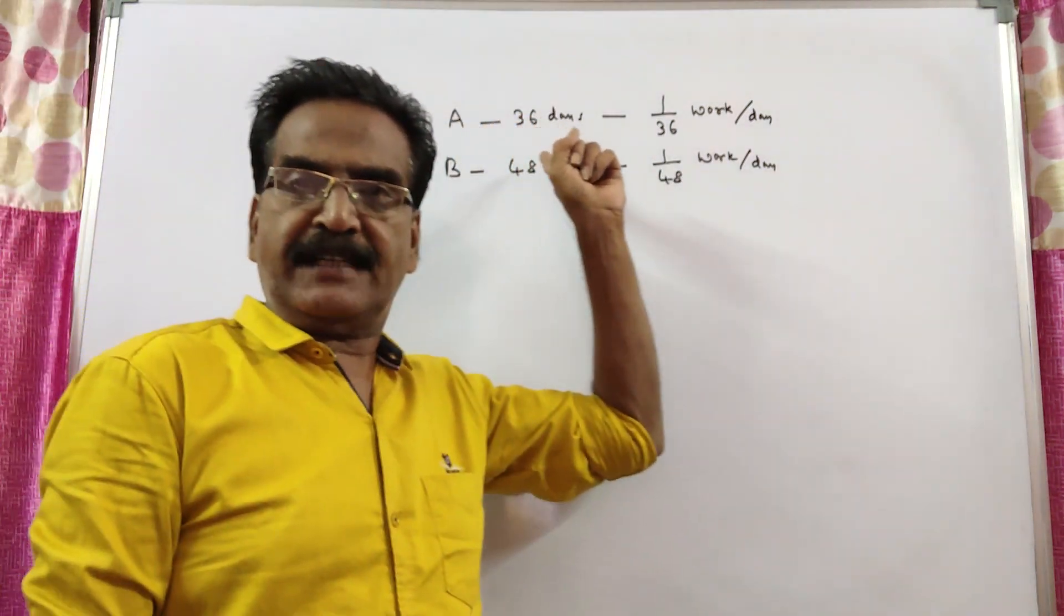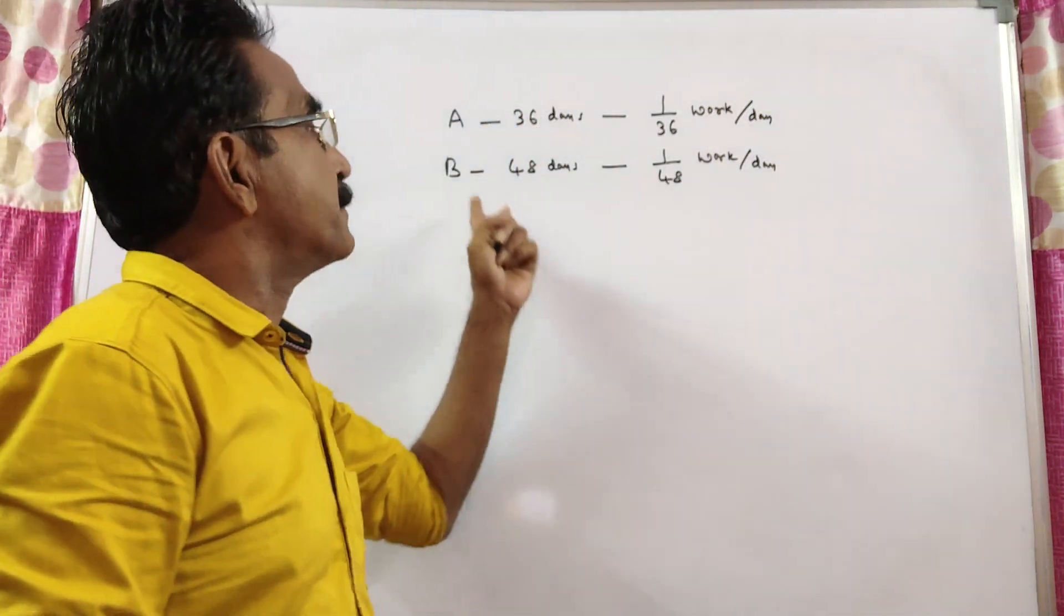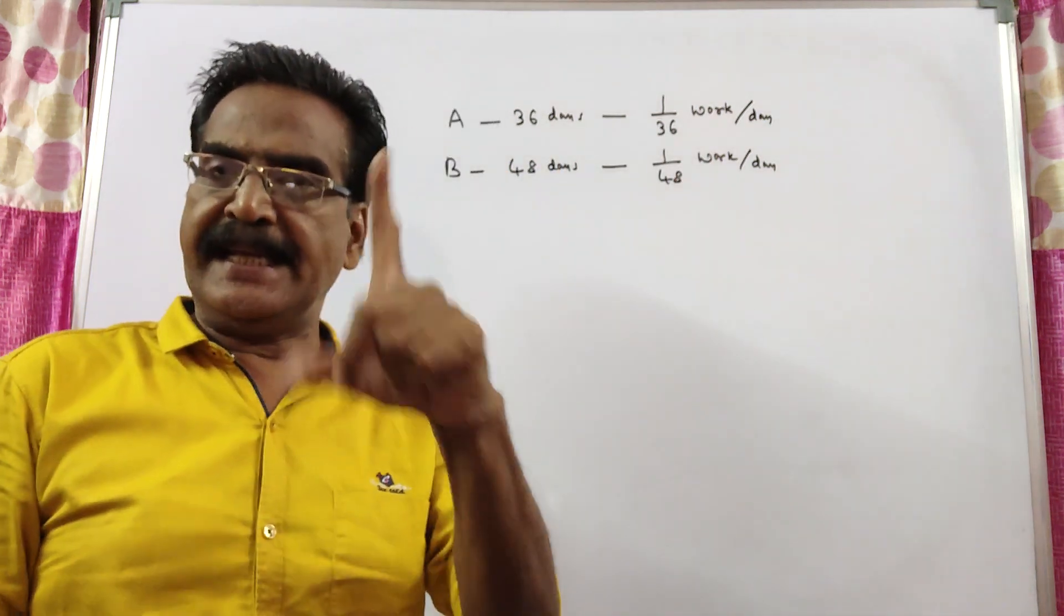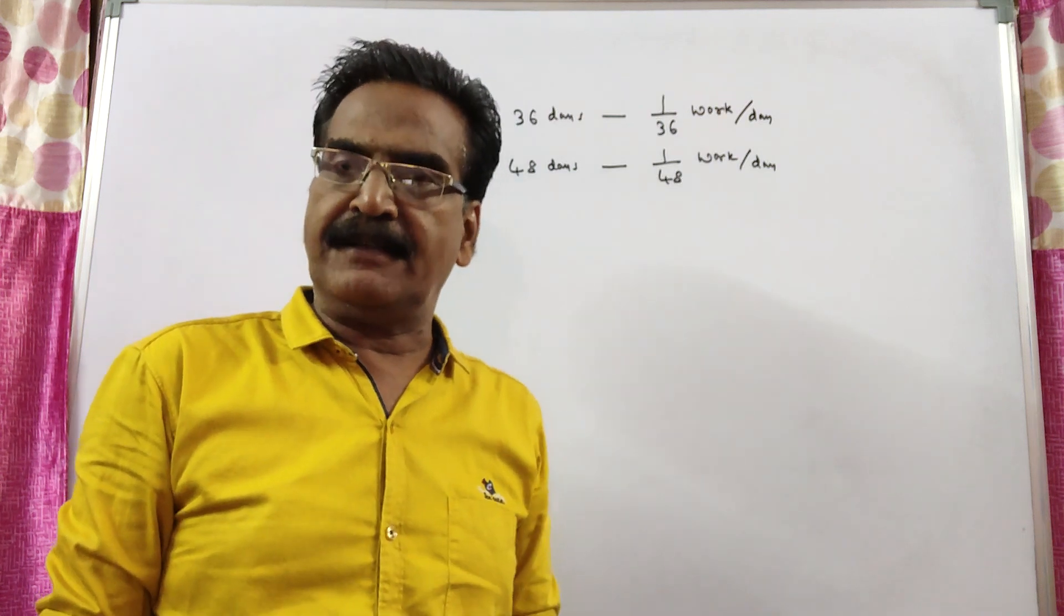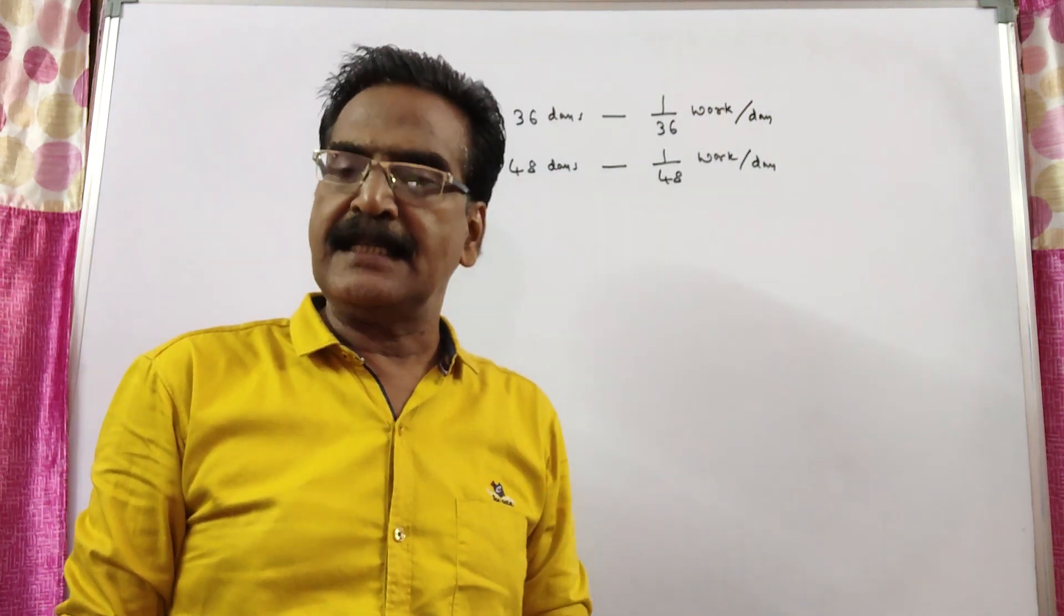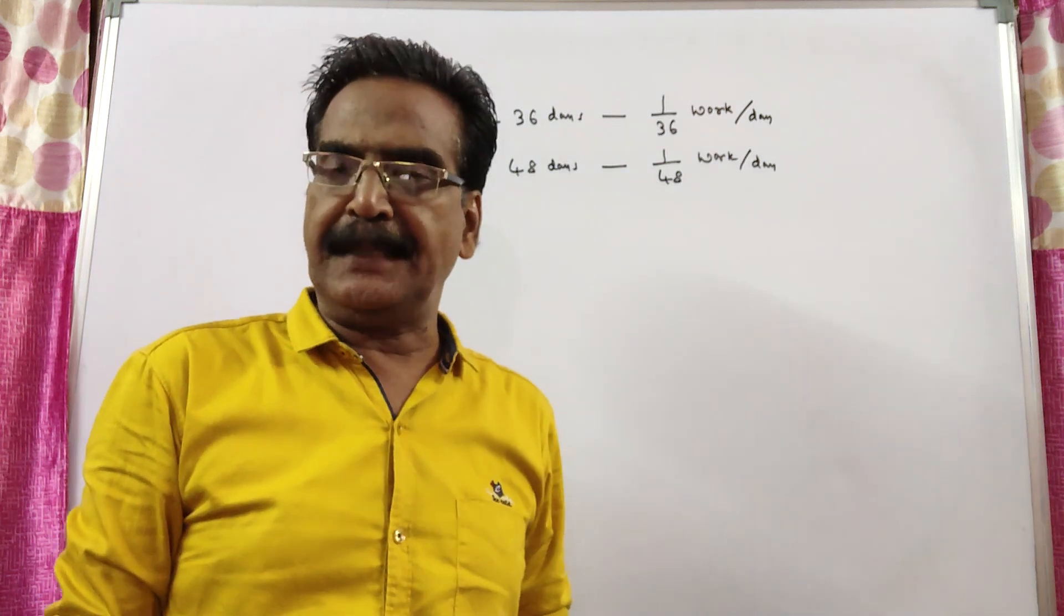See friends, A can do a work in 36 days and B in 48 days. A worked for X days and B worked for X plus 2 days. If one third work is complete, what is X?